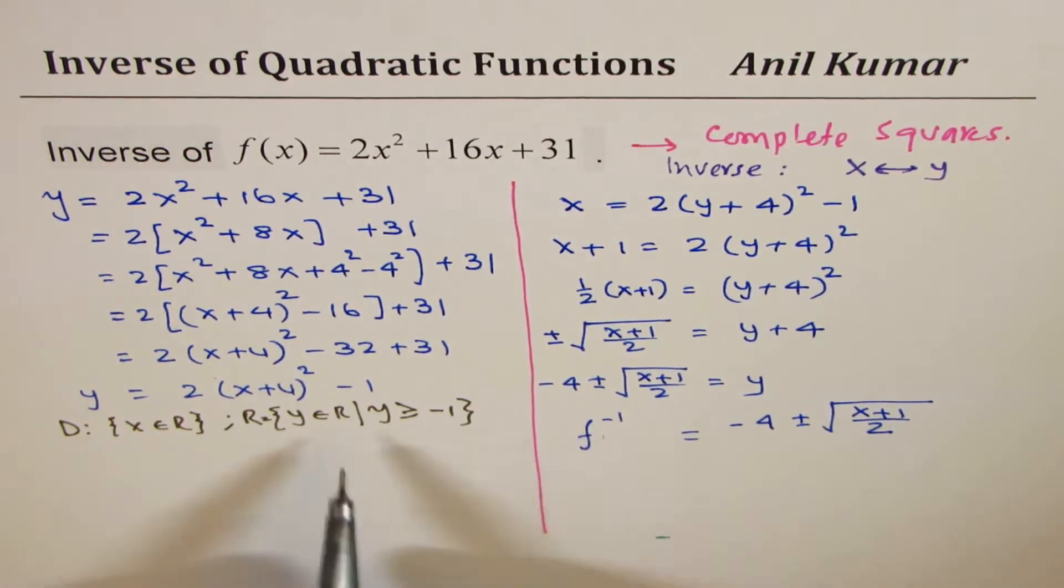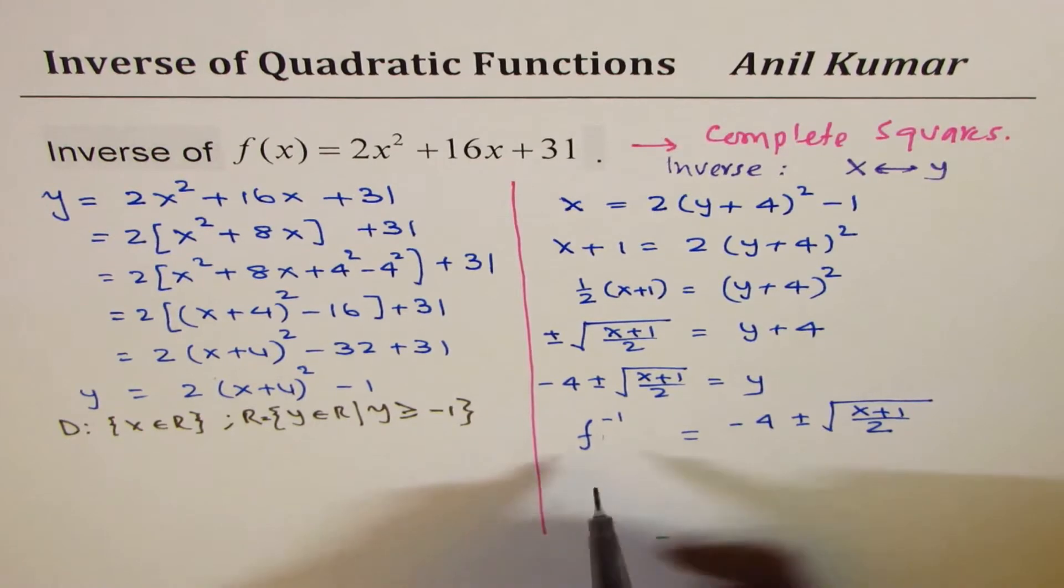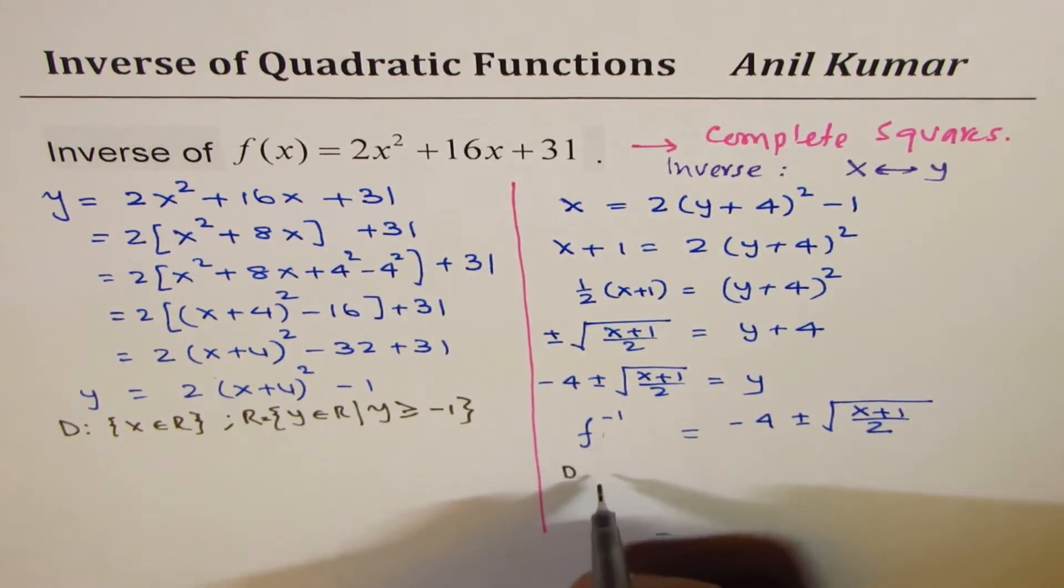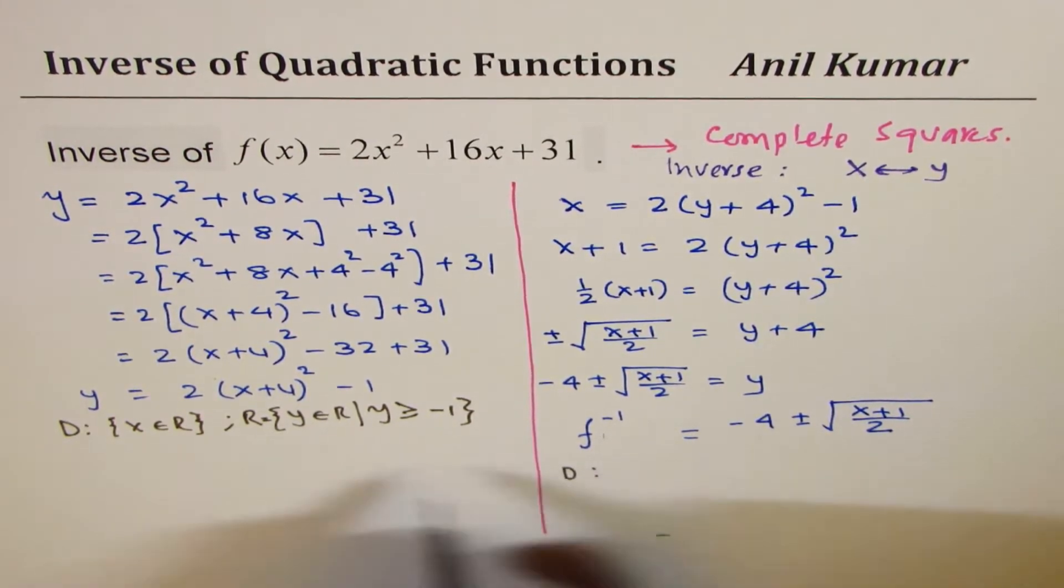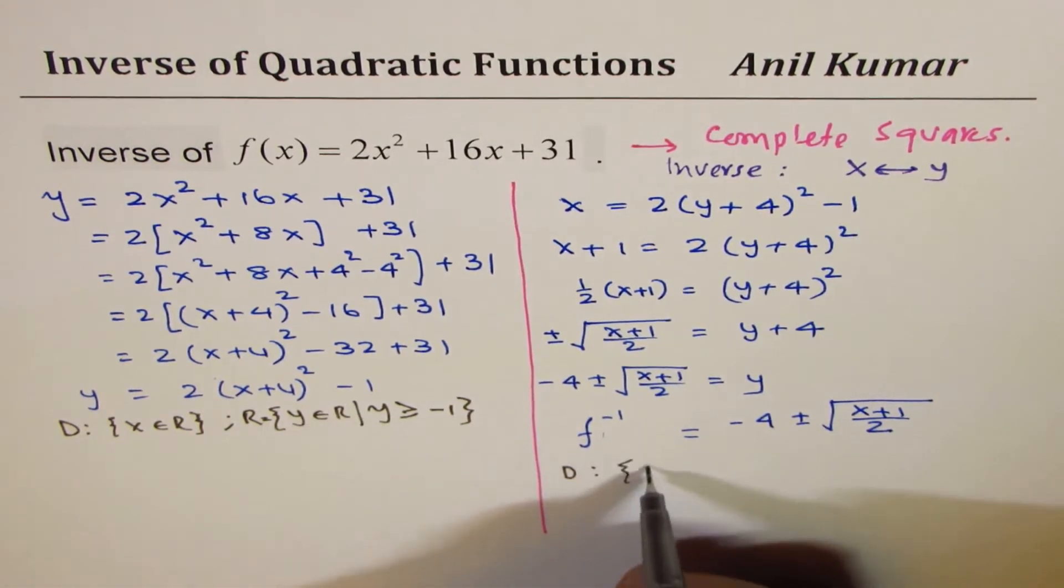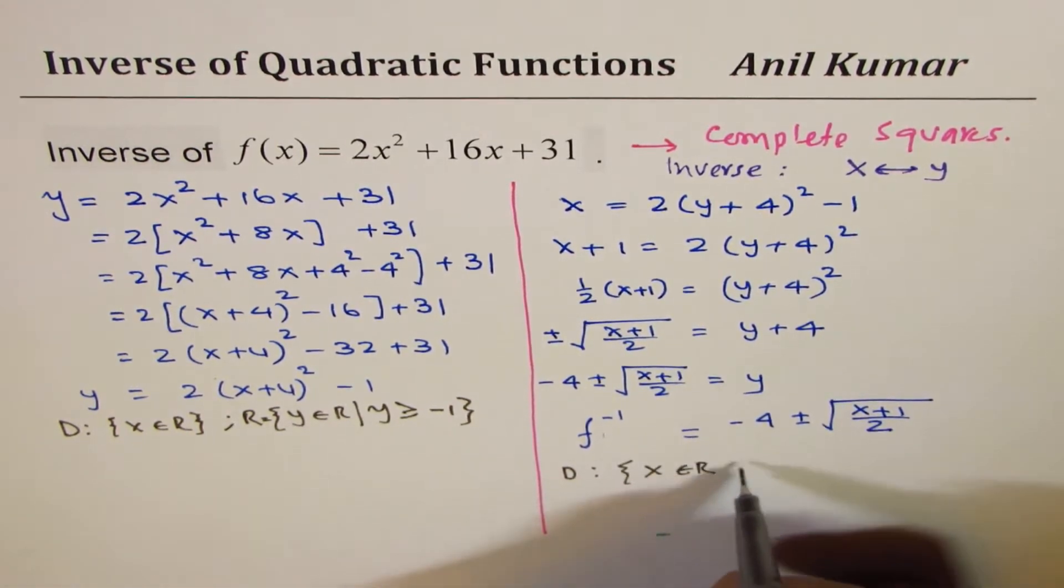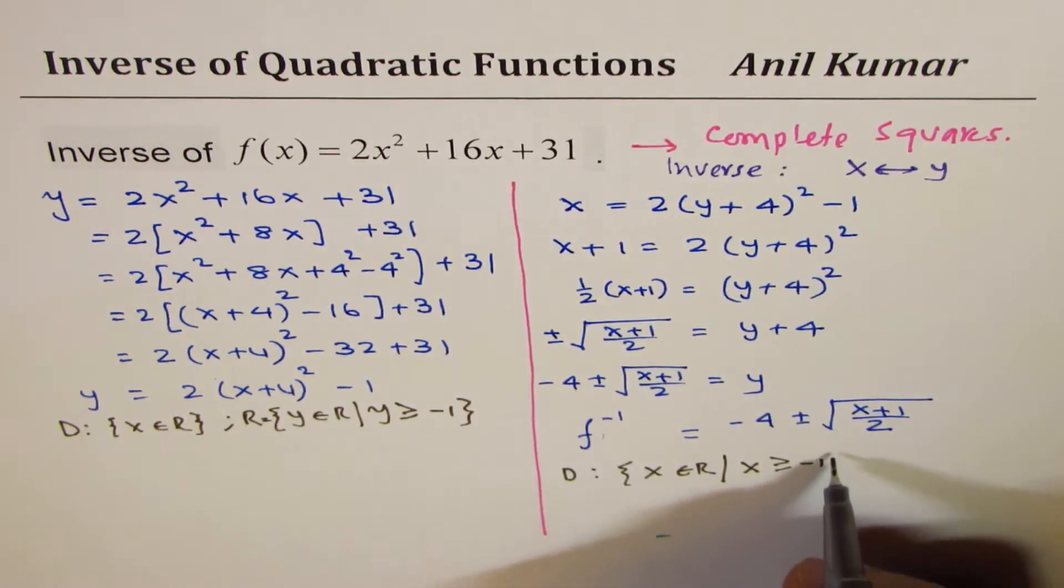Now, if you look into the inverse, these things flip. And so, now, the domain for the inverse will be this part. So, that means x belongs to real numbers, where x is greater than equals to minus 1. Do you see that?